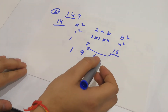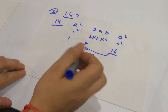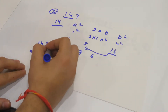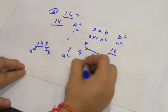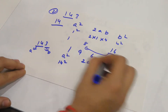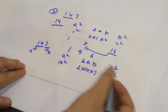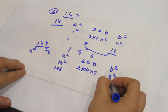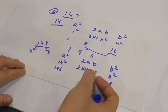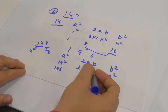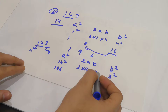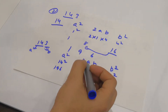Now I'll use this result to find the square of 143. I'll take 143, where A = 14 and B = 3, and again apply the formula A² + 2AB + B². So A² = 14² = 196, B² = 3² = 9, and for 2AB: first find 14 × 3 = 42, then 42 × 2 = 84.